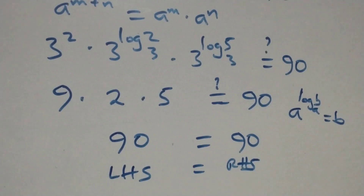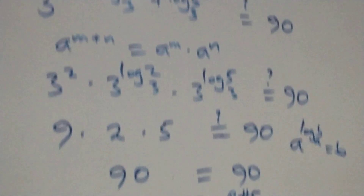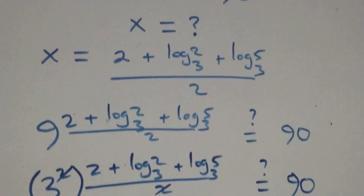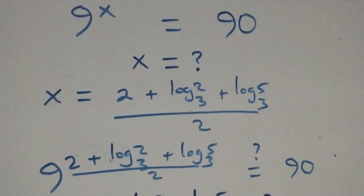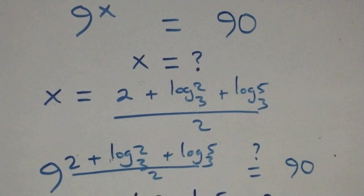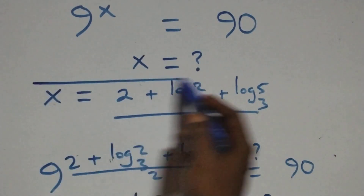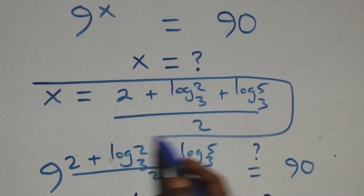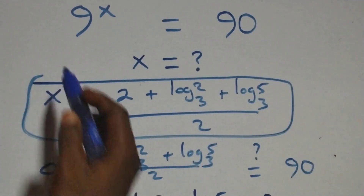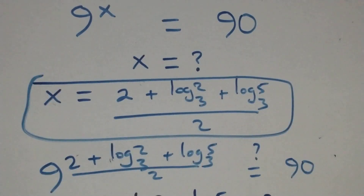And therefore we conclude here that x equals to (2 plus log 2 base 3 plus log 5 base 3) all over 2, which satisfies the given problem.